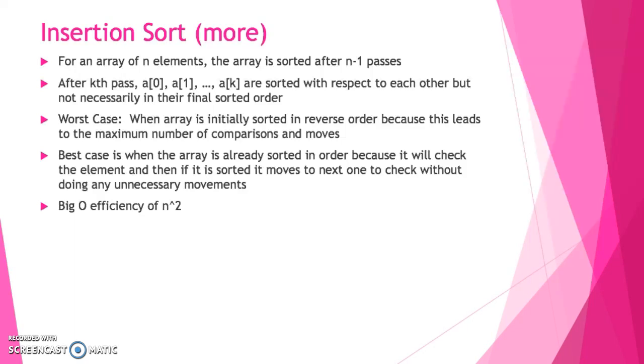The worst case for insertion sort would be if the array was initially sorted in reverse order, because there are the maximum number of comparisons and moves that need to be made. The best case would be if the array is already sorted, because this is what's considered an adaptive sort. When it checks to see if the values need to be moved down, if the array is already in sorted order, it will recognize that it does not need to have any shifts made, and it will progress on to the next iteration. That worst case scenario happens when the array is in reverse order, which would give us a big O efficiency of N squared again.